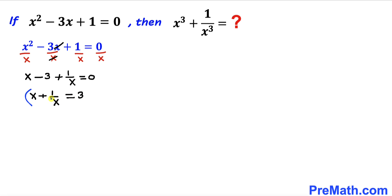Now let's go ahead and take a cube on both sides of this equation. So we got x plus 1 divided by x whole power 3 equals to 3 power 3 is same as 27.